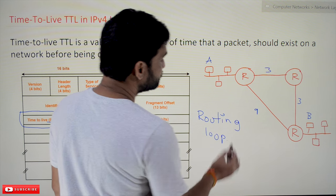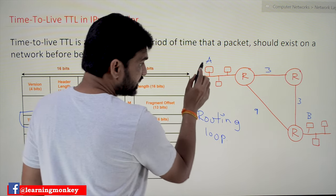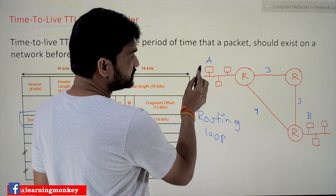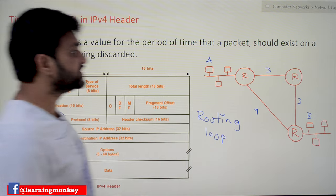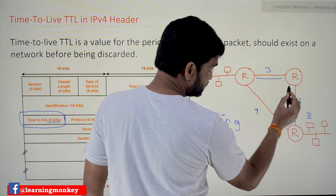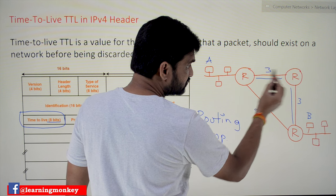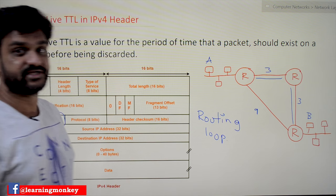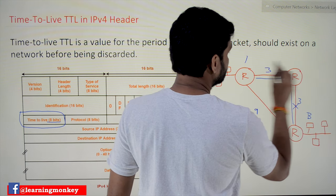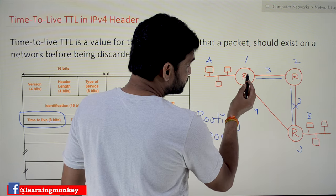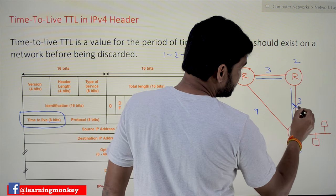There is a problem called routing loops in the network. Here we have two networks connected to the internet. Host A wants to communicate with host B. A will identify the shortest path — we'll understand the shortest distance algorithms in later classes. Assume this is the shortest path, so to transfer the packet from A to B, it has to go through router one, then router two, then router three to reach the destination.